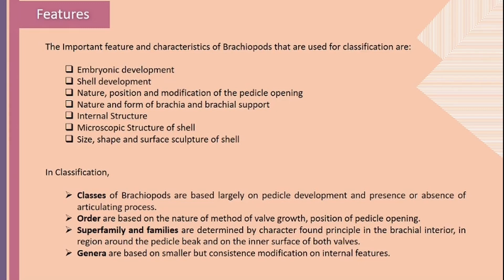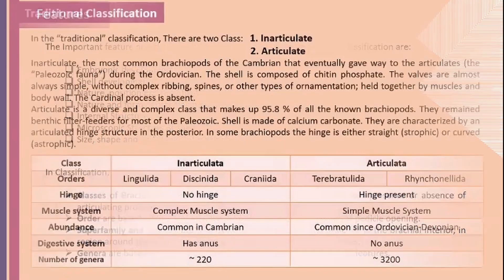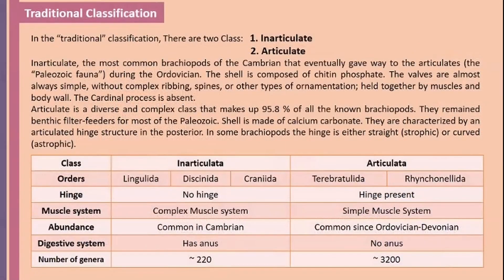The first is traditional classification. Traditional classification has two main groups: Inarticulate and Articulate. Inarticulate are divided into three orders: Lingulida, Discinida, and Craniida.